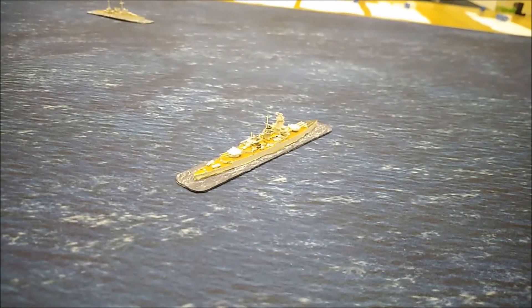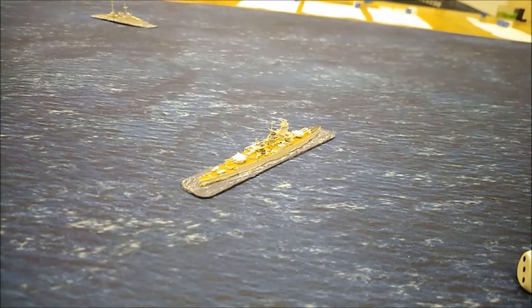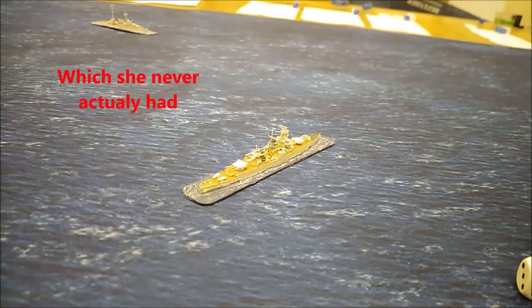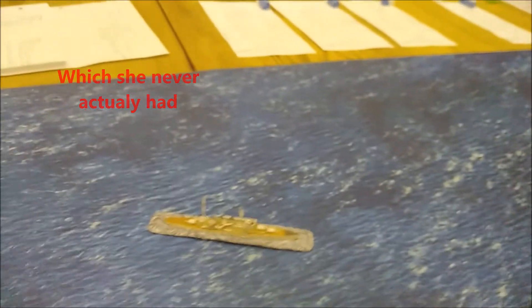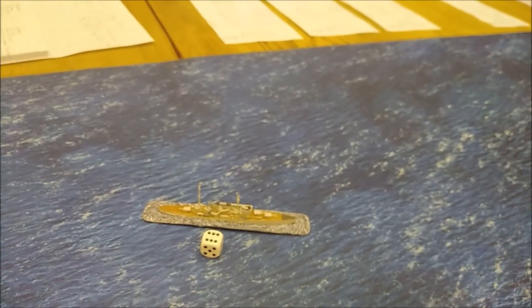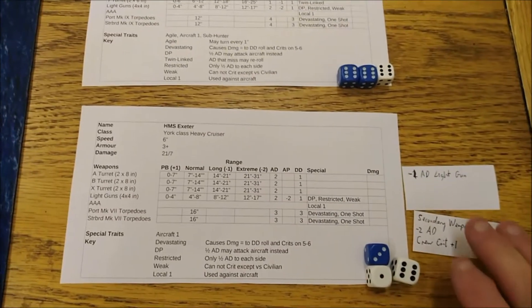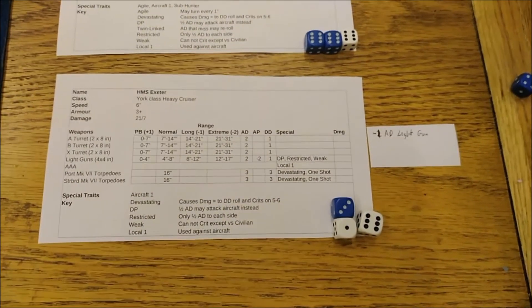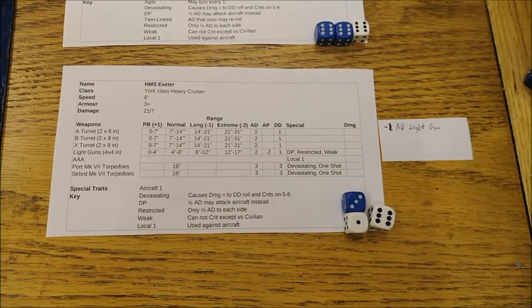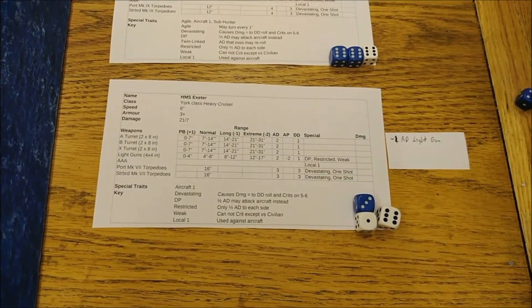So now we're going to the end phase. In the end phase, we'll roll for repairing damage. We'll try the Graf Spee. And she rolls a five, so she does repair her damage. It's five plus four for her crew, it's above an eight. The Exeter rolls a six, so also repairs one level of damage. So the Graf Spee's propellers are fixed. And the secondary damage on the Exeter is fixed. But she can only repair one level a turn. So that means she's still got the first one on her weapons. And that ends turn four.